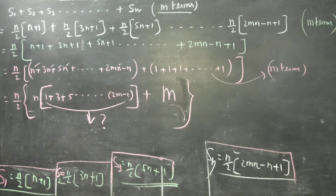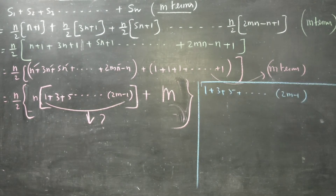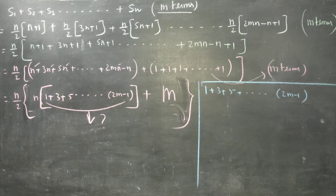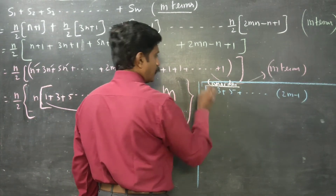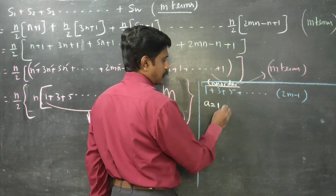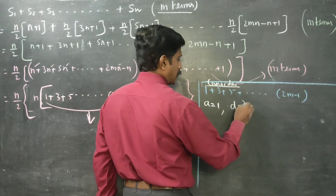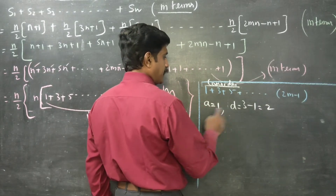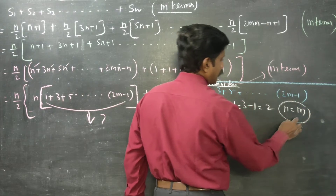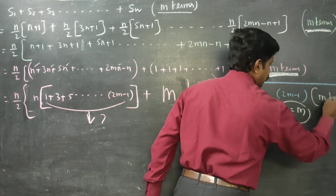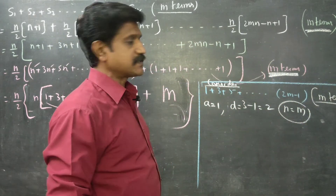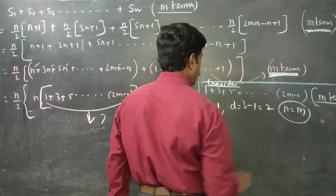To find 1 plus 3 plus 5 dot dot dot 2m minus 1, consider this sum separately. Here a is equal to 1, d is equal to t2 minus t1, which is 3 minus 1, so d equals 2. A is ready, d is ready. The number of terms is m terms.